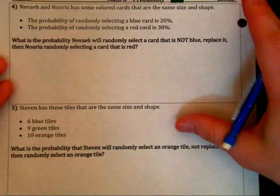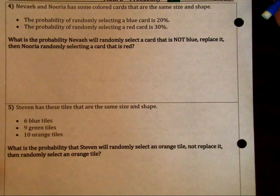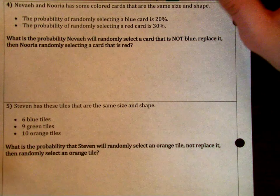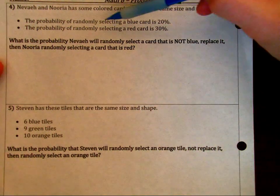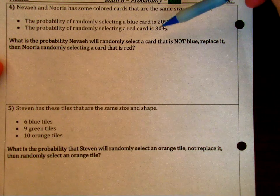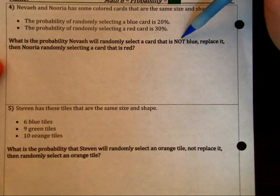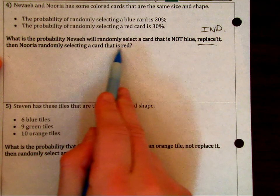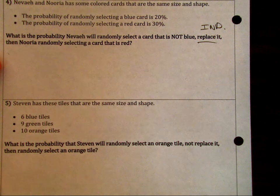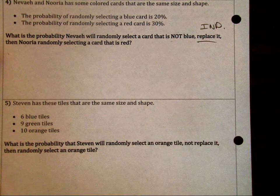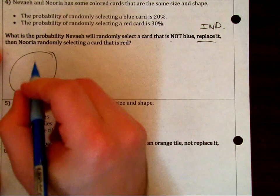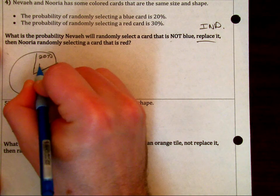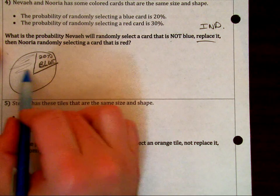Now, on the back, for number four, it says Nevaeh and Noria have some colored cards that are the same size and shape. This is just trying to let you know they have no kind of difference or anything like that. You're not more likely to pick one or the other. It says probability of selecting a blue is 20%. Probability of selecting a red is 30%. What is probability Nevaeh will select a card that is not blue, replace it, which means independent, and then Noria selects a card that is red. A lot of people just could not comprehend the idea of having a not blue card. Very simply, if this amount right here is 20%, that is blue, that means all the rest of this, all the remaining amount is not blue.